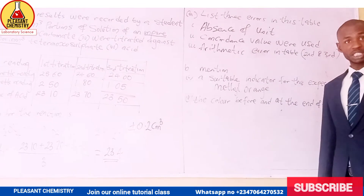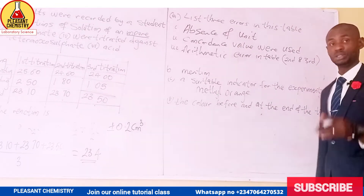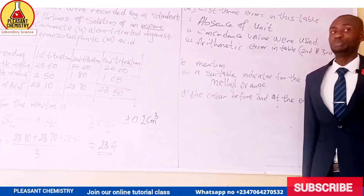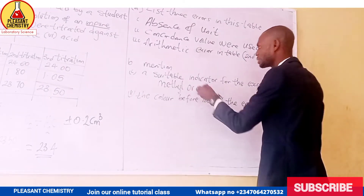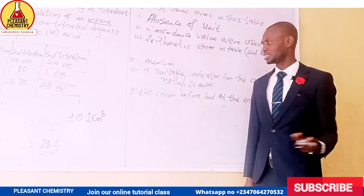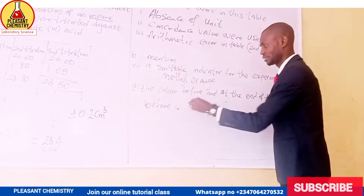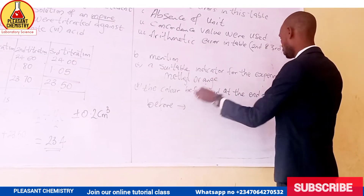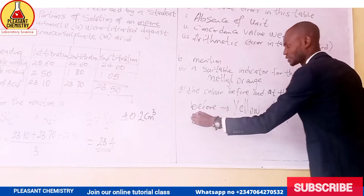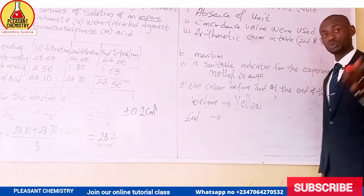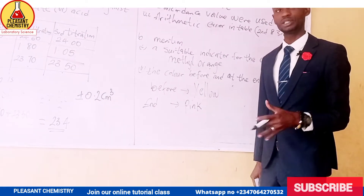The next question asks for the color before and at the end of the titration. When we are titrating, we put the indicator inside our base — please take note. Since we are using methyl orange, we put methyl orange inside the base. The color of methyl orange before the titration, when placed inside the base, will be yellow. At the end of the titration — at the endpoint where neutralization has taken place — the color changes.